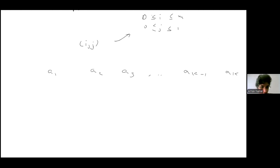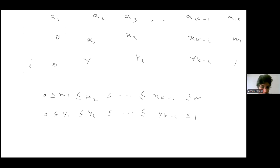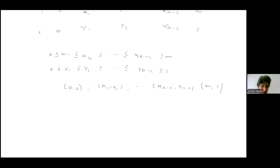We know the first pair is (0, 0) because it's 1, and the last pair is (m, 1) because it's 2^m · 3. So the sequence looks like (0,0), (x1,y1), (x2,y2), ..., (x_{k-2}, y_{k-2}), (m,1), where x_{k-2} ≤ m and y_{k-2} ≤ 1, and none of these pairs should coincide with forbidden values. We have to find the number of such sequences.